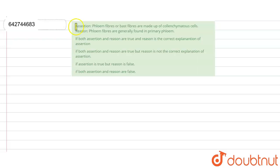Hello everyone, today we will see the following question. The question is assertion and reason based. Assertion statement says phloem fibers or bast fibers are made up of collenchymatous cells. Reason being phloem fibers are generally found in primary phloem.